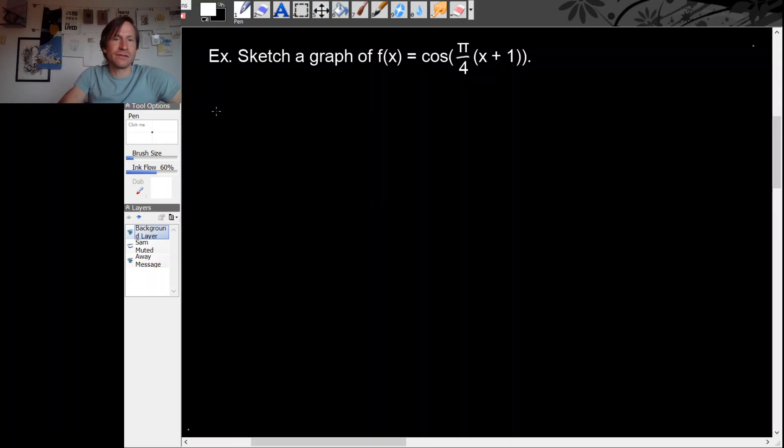Since the trig function involved is cosine, let's start with the graph of cosine and then we'll apply some graphical transformations to get the graph that we want. So regular old unmodified cosine looks like this.